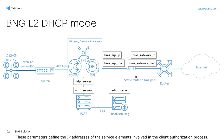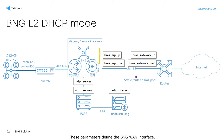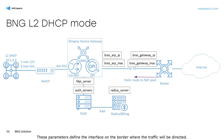These parameters define the IP addresses of the service elements involved in the client authorization process. These parameters define the BNG-WAN interface. These parameters define the interface on the border where the traffic will be directed.